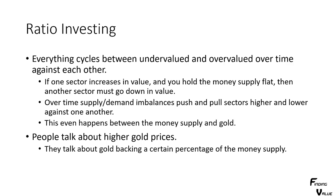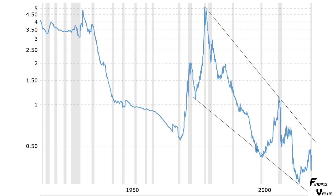Over time, supply-demand imbalances push and pull sectors higher and lower against one another. This even happens between the money supply and gold. People talk about very high gold prices and gold backing a certain percentage of the money supply. If we were to go back onto a gold standard, the gold price would have to be $50,000 an ounce — and it did reach that kind of revaluation in 1980. We're going to look at the money supply versus gold in history, and as you can see, we are dropping quite rapidly.